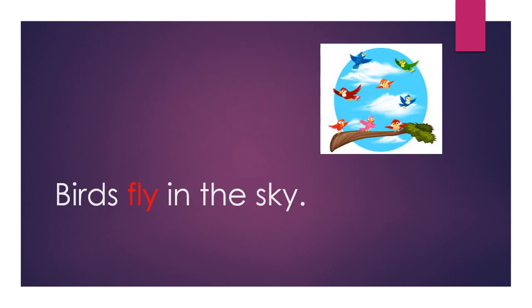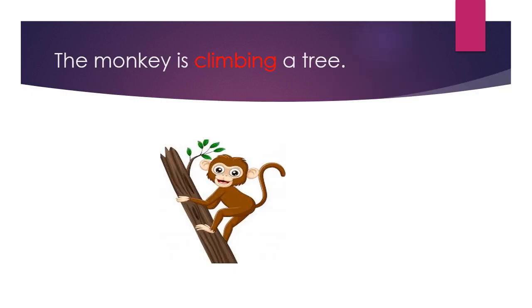Now look at the sentences. Birds fly in the sky. The word 'fly' — you can see it is highlighted with red. What are the birds doing? Birds fly in the sky. In this sentence, the monkey is climbing a tree. What is the monkey doing? Monkey is climbing. So that word 'climbing' is an action word.